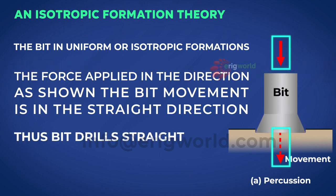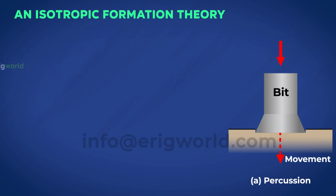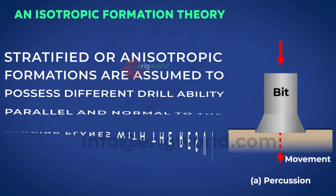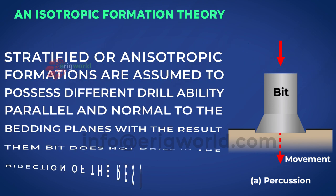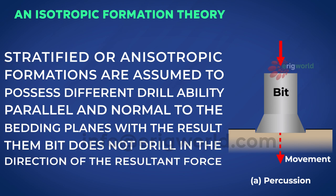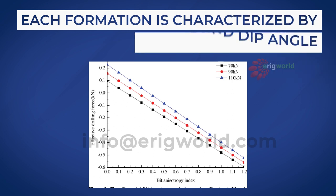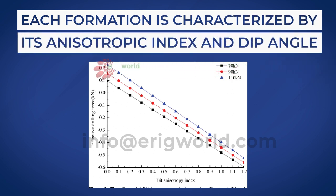Thus, the bit drills straight. However, since stratified or anisotropic formations are assumed to possess different drillability parallel and normal to the banding planes, the bit does not drill in the direction of the resultant force. Each formation is characterized by its anisotropic index and dip angle.